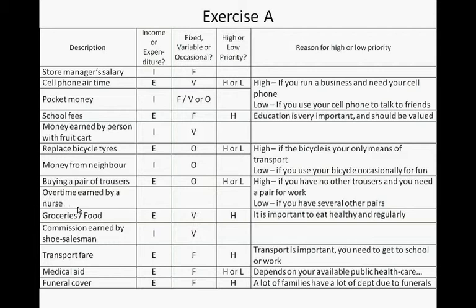Overtime earned by a nurse is an income, but it is variable because it's only earned from time to time. Groceries are an expenditure; they are variable because costs change from month to month, and high priority because it is important to eat healthy and regularly. Commission earned by a shoe salesman is an income and is variable because it depends on the amount of shoes sold. Transport fare is an expense — usually fixed if you buy a monthly bus ticket — and high priority because you need to get to school or work.